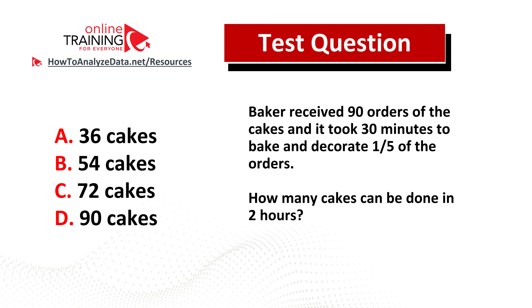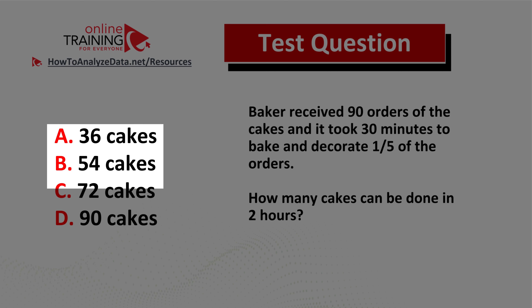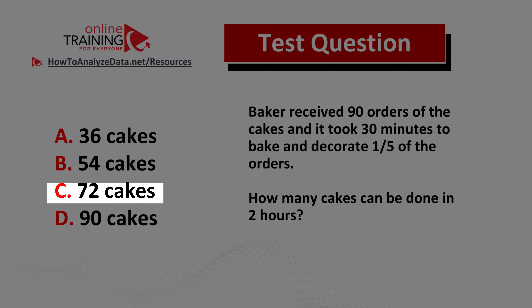Here's a question from the real test you can try to solve on your own. A baker received 90 orders of cakes and it took 30 minutes to bake and decorate one-fifth of the orders. How many cakes can be done in two hours? Choice A: 36 cakes. Choice B: 54 cakes. Choice C: 72 cakes. Choice D: 90 cakes.